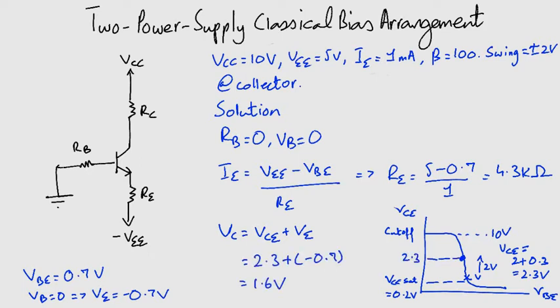Remember that biasing the transistor at VCE equals 1.6 means biasing the transistor VCE equals 2.6 volts. This ensures that we have a swing of plus minus 2 volts at the collector.